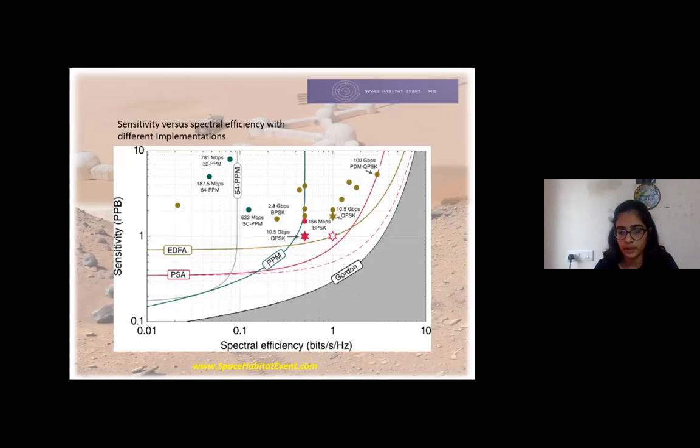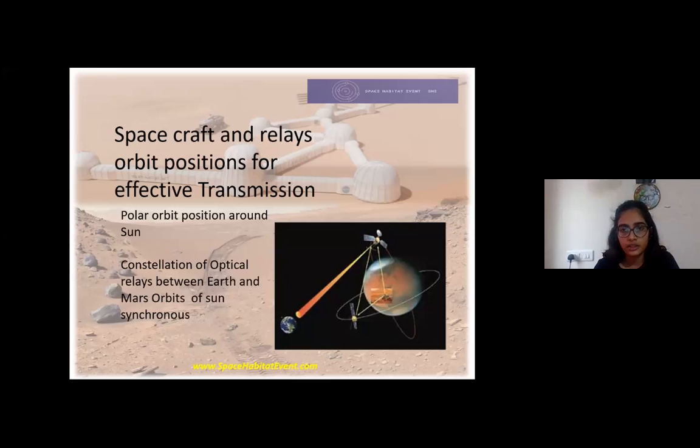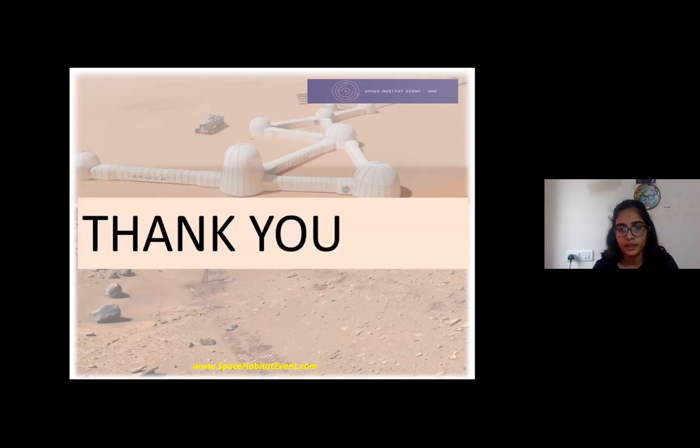For construction of this kind of optical relay system, we need to choose positions. During the conjunction period, we can place optical satellites at the polar position of the Sun, as well as build a constellation around the Sun between Earth and Mars in a Sun-synchronous way, so that the signal can be transmitted and regenerated by the relays with high data speed of around 10 gigabytes per second. Yeah, that's it, thank you.